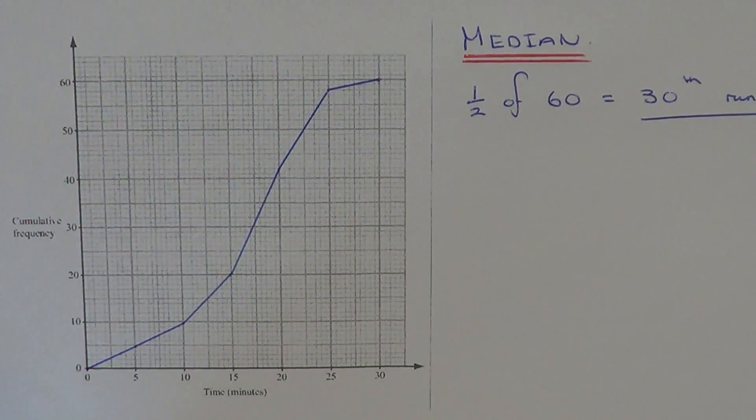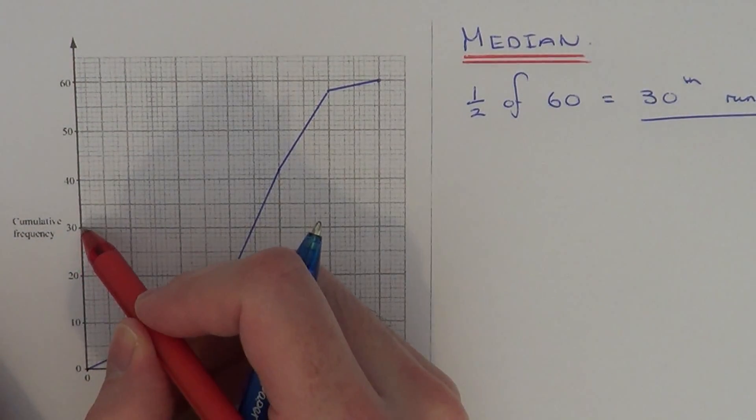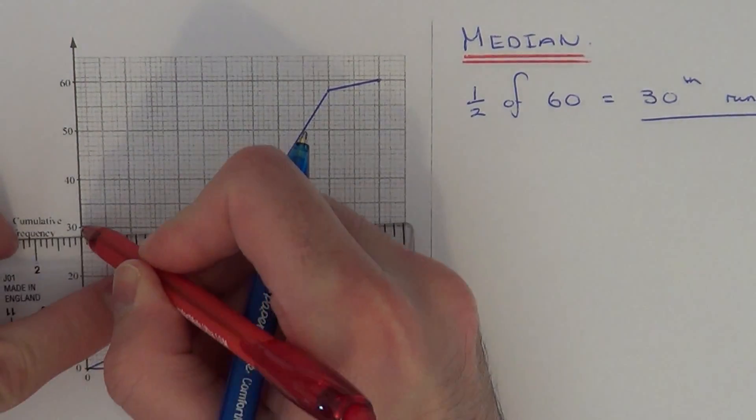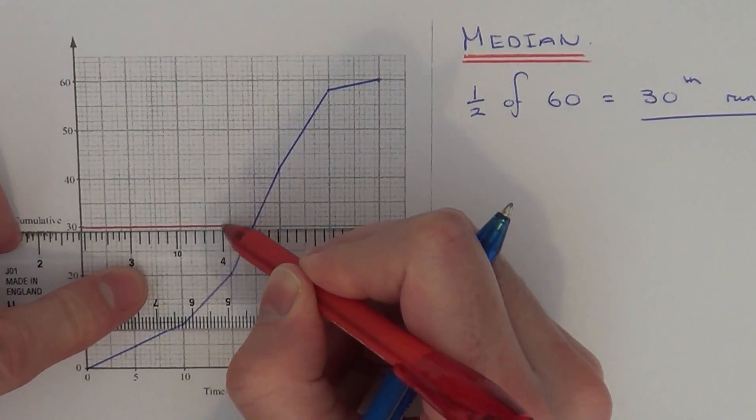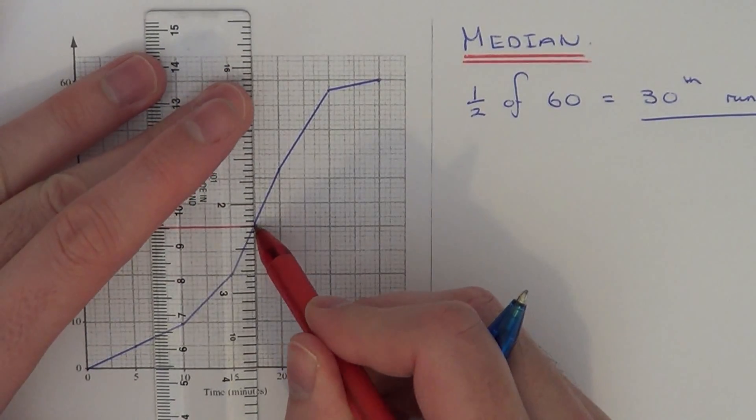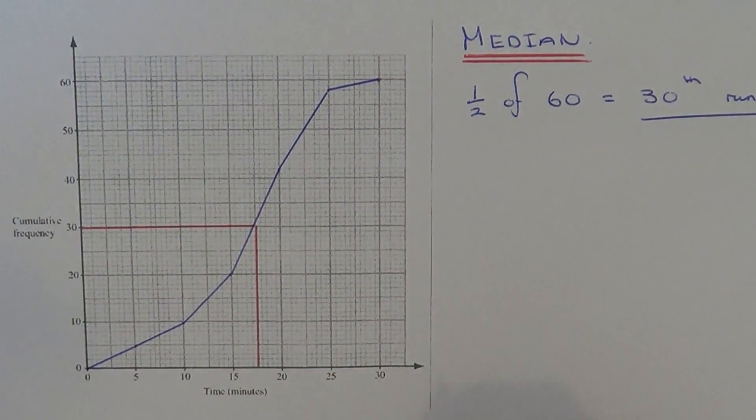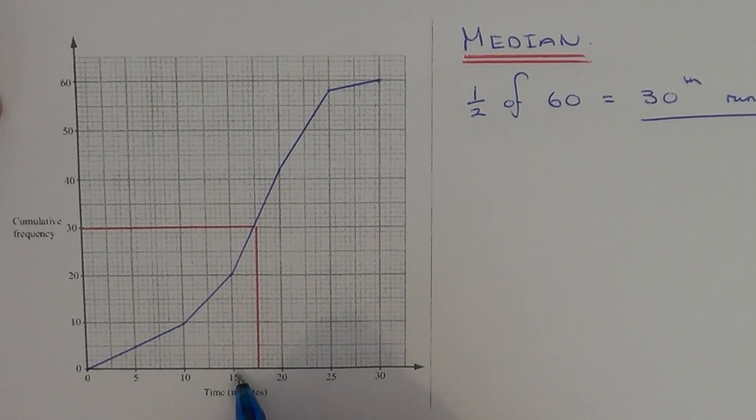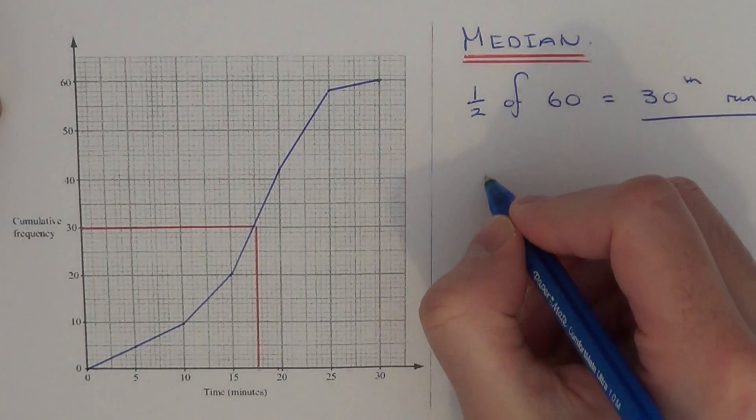Go back to your cumulative frequency graph and look for 30, which is here. If you do a horizontal line across to your graph and read it off, this will tell you the median time. This was halfway between 15 and 20, so this is 17.5. So the median time is 17.5 minutes.